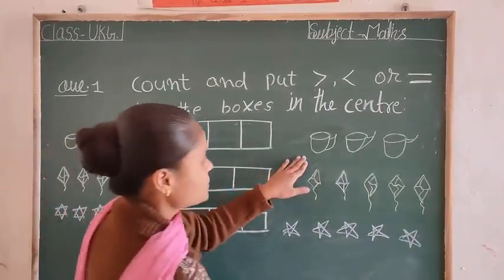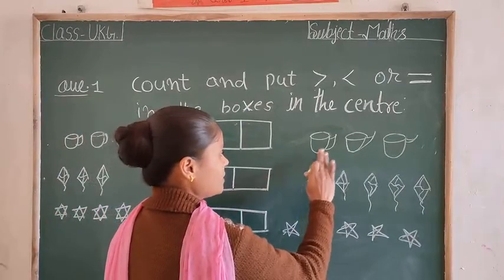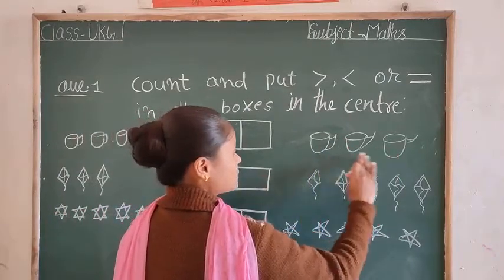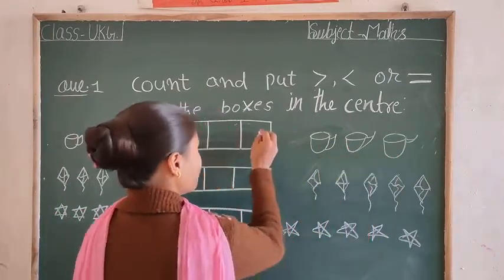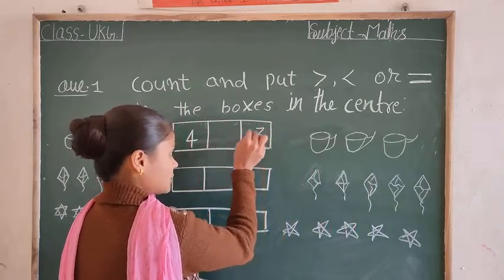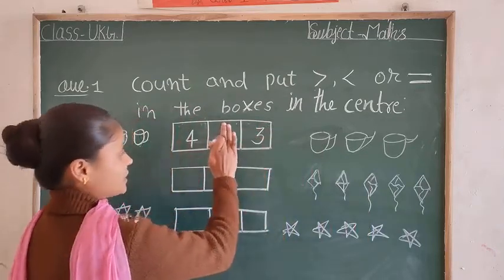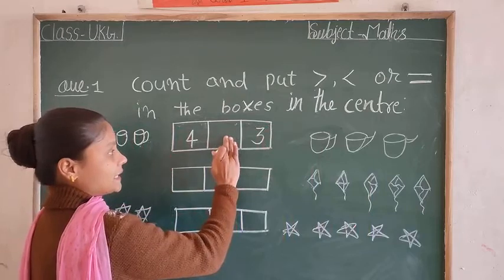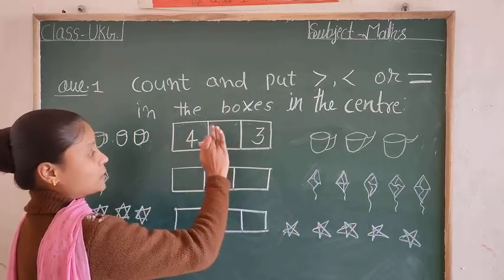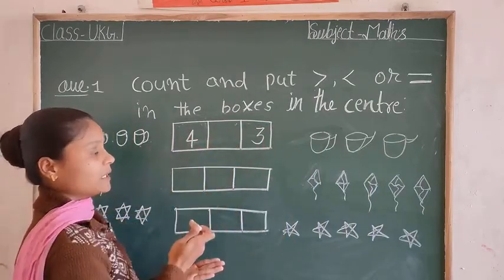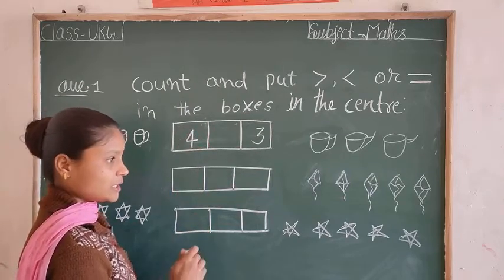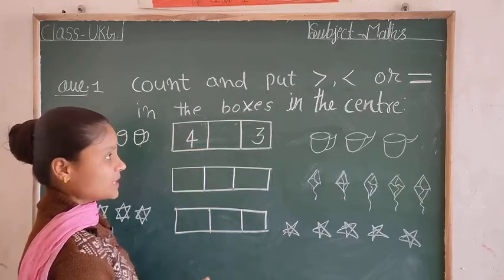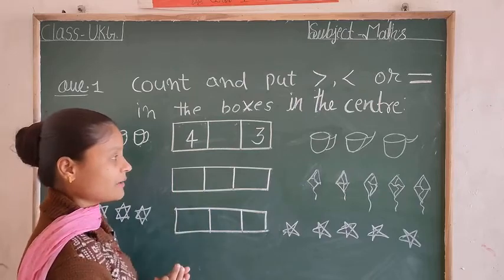And the other side, how many objects are here? One, two, three. How many objects are here? Three. So this number will be three. Now, greater than, less than, and equal to signs are used. So these two numbers are different. The number is number four.